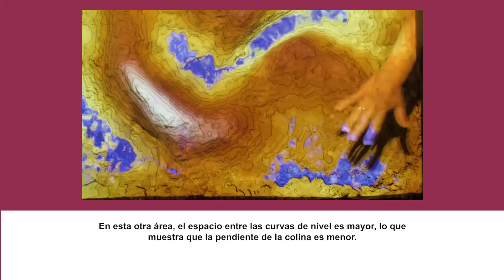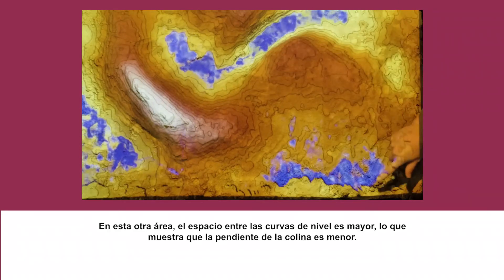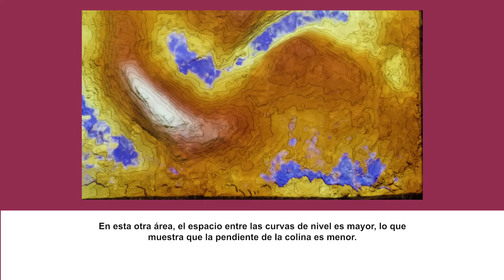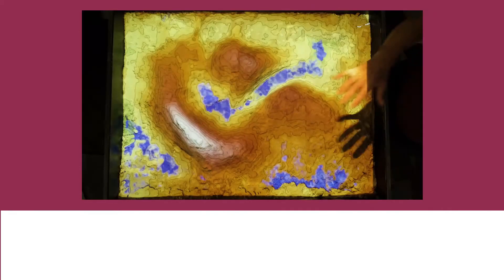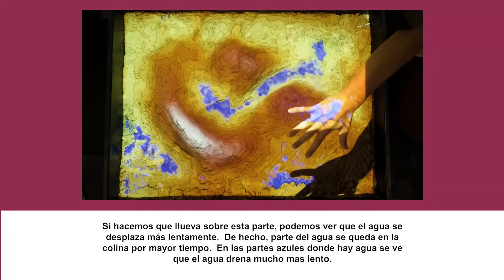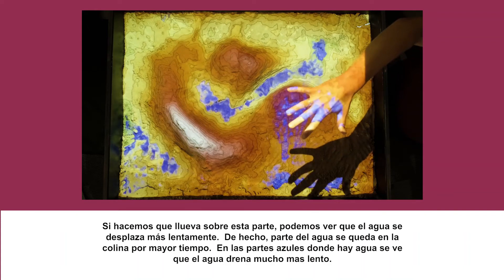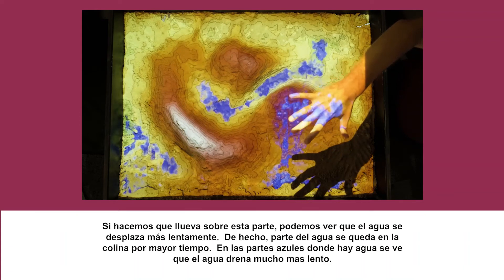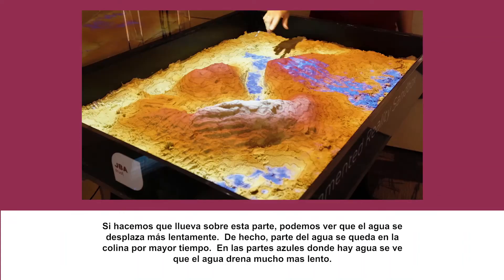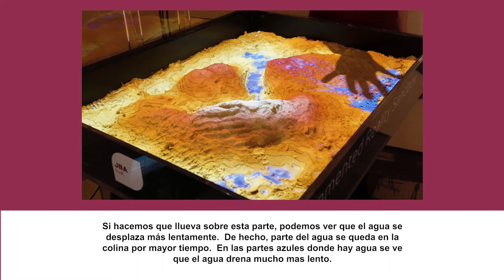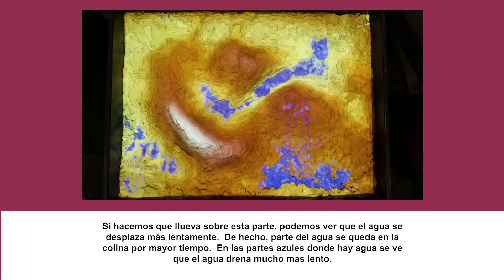In this area, the contour lines are much further spaced, showing that the hill slope is much shallower. If we introduce rain to this part of the catchment, you can see that it flows off quite a lot more slowly. In fact, some of it is staying on the hill slope for longer — you can see where those bits of blue are showing that the water is draining off more slowly.